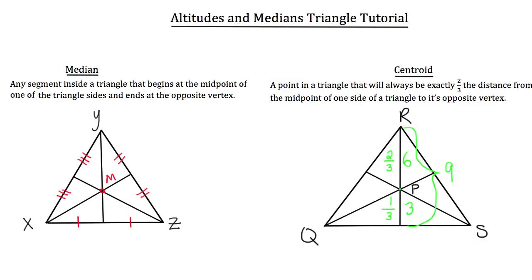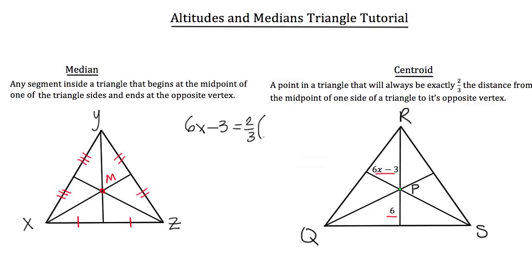Now let's look at a common algebra problem associated with centroids and medians. What if that same segment is broken into two parts where the top portion PR has a length of 6x minus 3, and the lower portion from P down to base QS has a length of 6? How do you solve for x? Since the top segment 6x minus 3 is two-thirds the length of the overall segment, we write: 6x minus 3 equals two-thirds times (6x minus 3 plus 6).